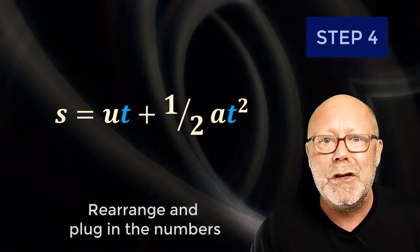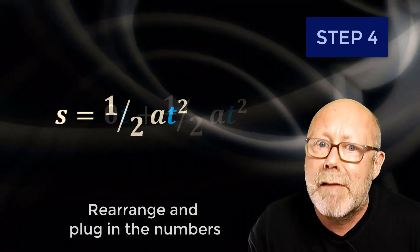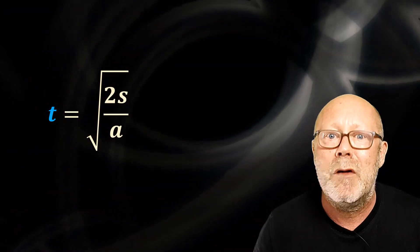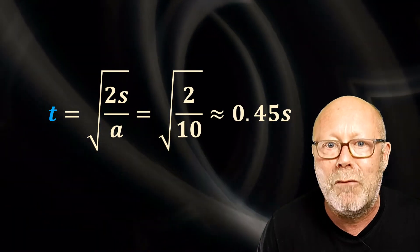Step 4. Super simple. Just rearrange the equation you selected to put the variable you're looking for as a subject, and then plug in the numbers. In our situation, we find that the ball will fall in 0.45 seconds.